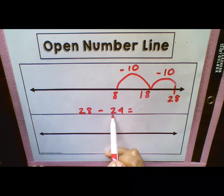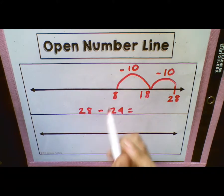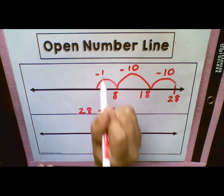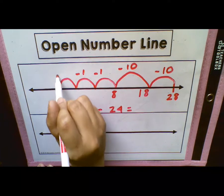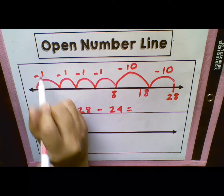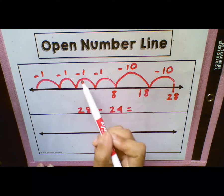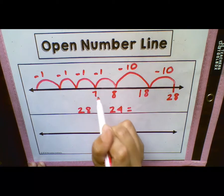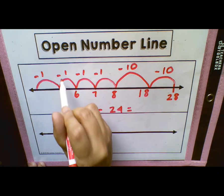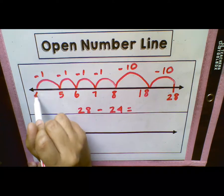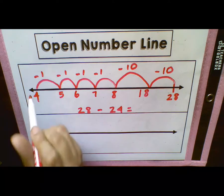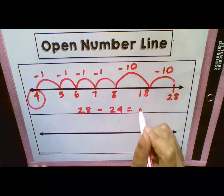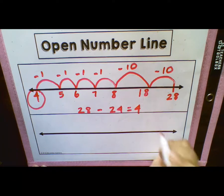Now we've gone back our two tens, which we know is made up in the number 24. Now we need to go back our four ones. So we're going to jump minus one, minus one, minus one, and minus one. We need to make sure we have our four — one, two, three, and four. So now we have everything we need. We jumped back our two tens and our four ones. Eight minus one is seven, seven minus one is six, six minus one is five, five minus one is four. So our answer is going to be four. 28 minus 24 equals four.